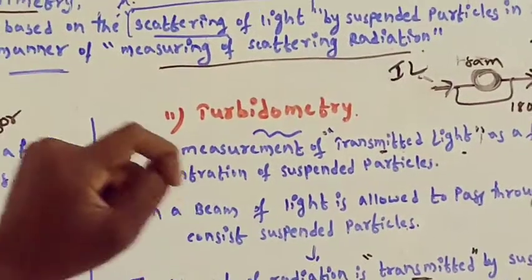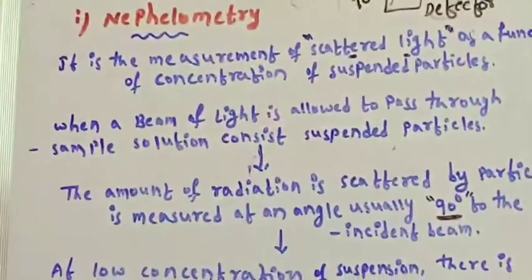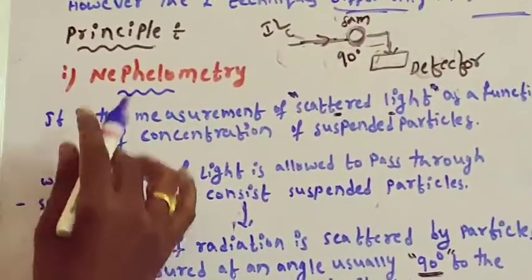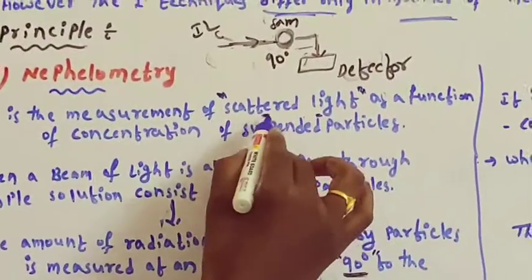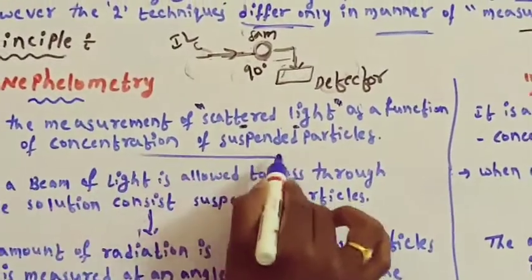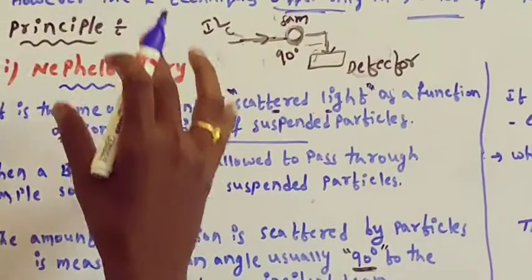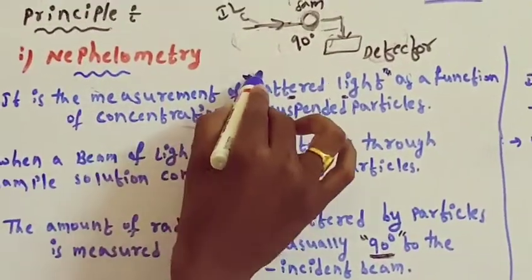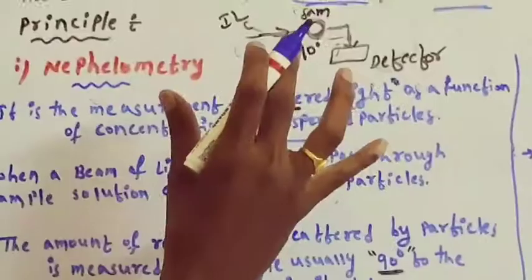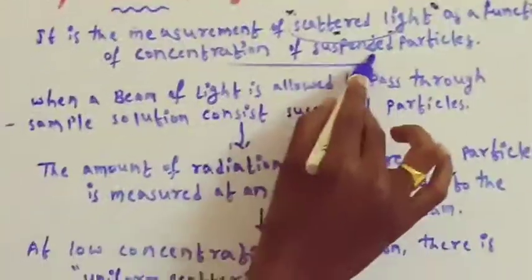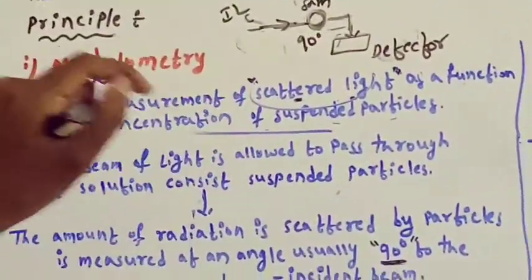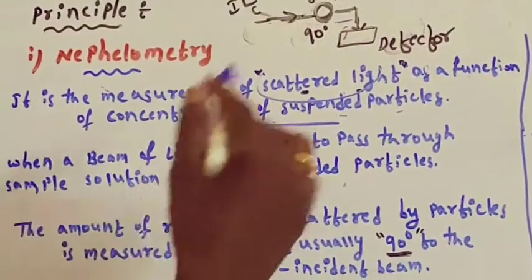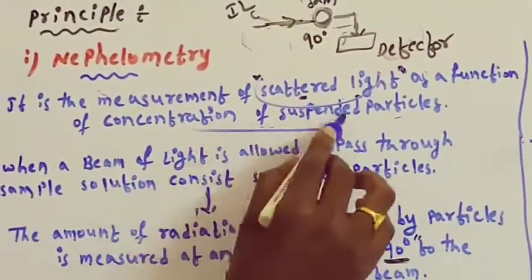Let's see the principle of nephelometry and turbidimetry. Nephelometry is the measurement of scattered light as a function of concentration of the suspended particles. What is measured in nephelometry? Scattered light, as a function of concentration of the suspended particles.